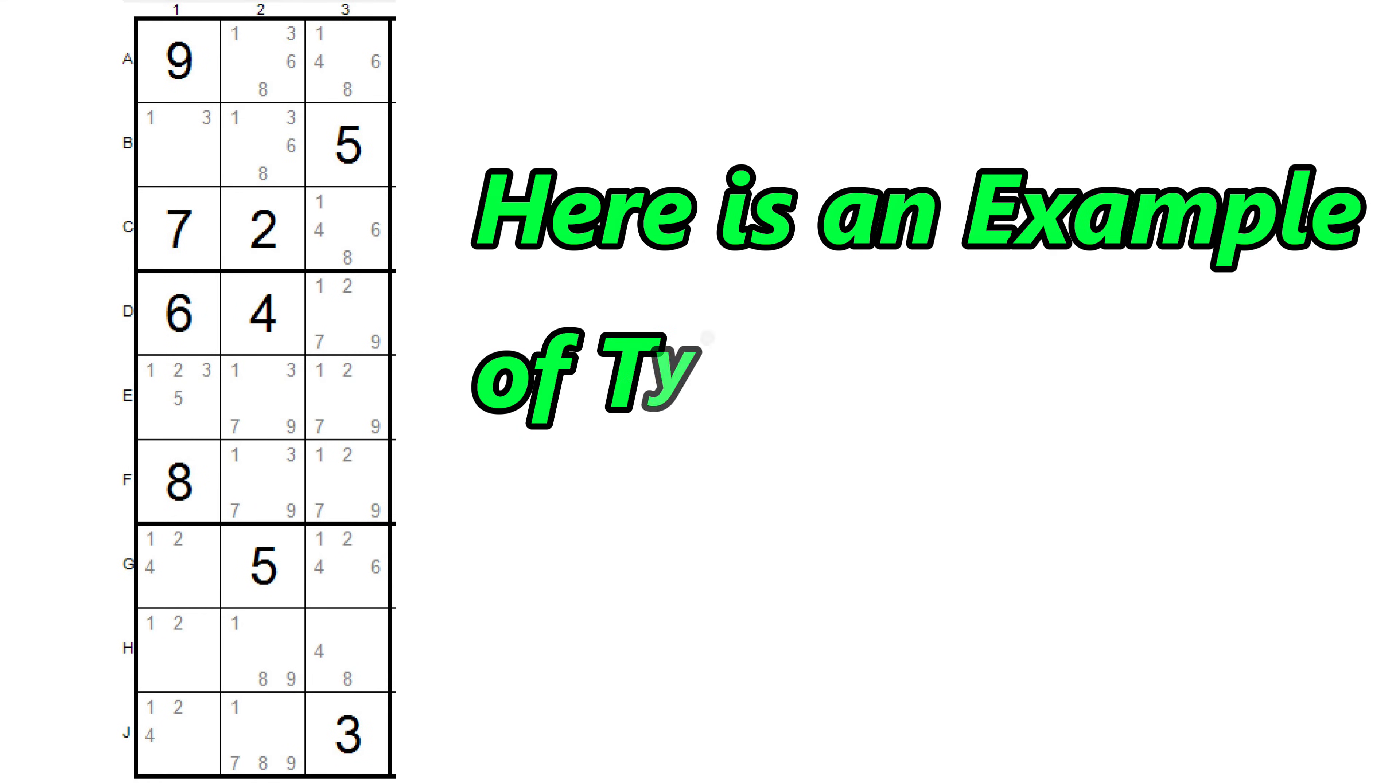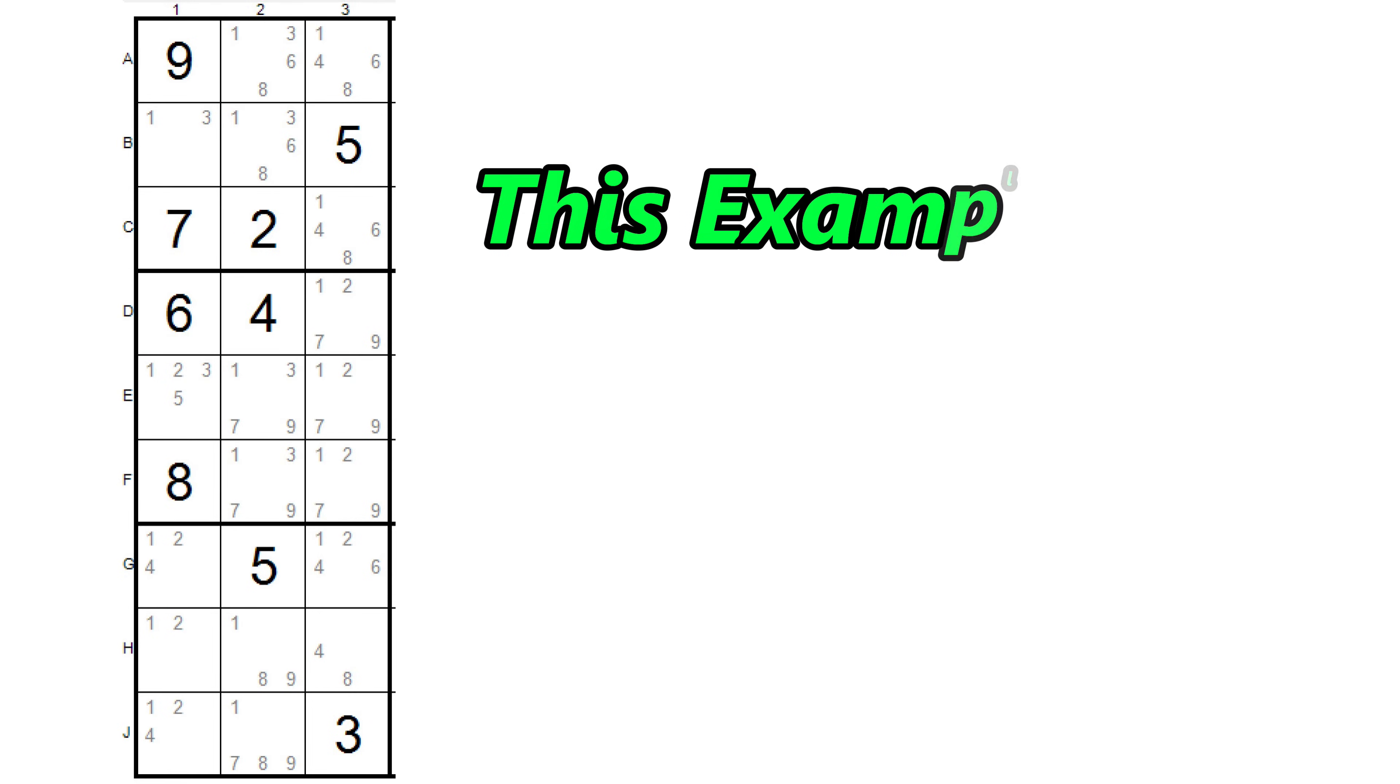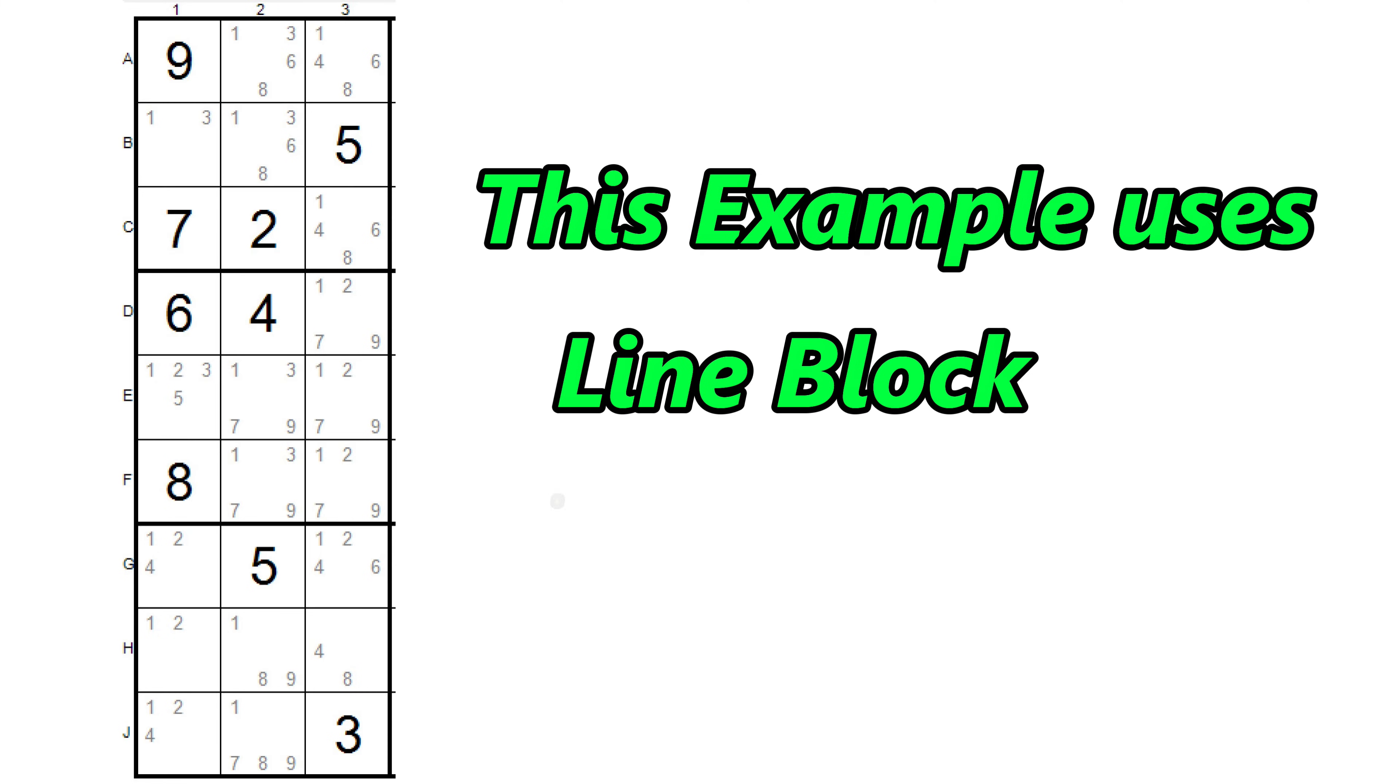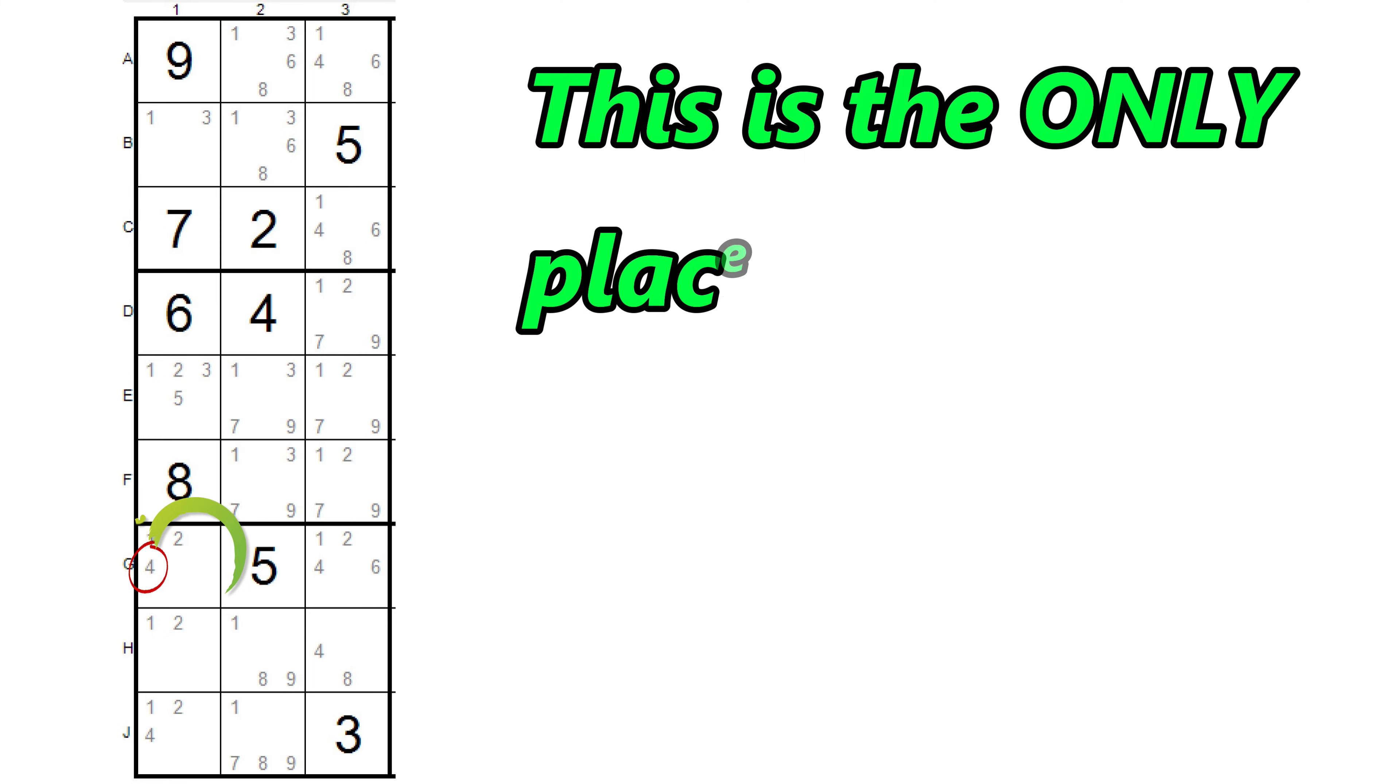Let's look at this example. Because we are looking at the line first, it's the opposite of what we did before with type 1 locked candidates, where we looked at the block first. Let's take a look at this example more closely. In this case, the line we are going to look at is a column instead of a row, but it can easily be a line across instead of down. Let's look at column 1. We can see that the only place a 4 can go in column 1 is here and here.